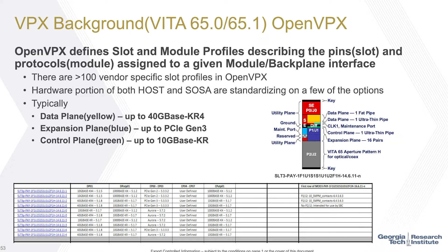Module profiles are essentially a table listing the different planes — data plane, expansion plane, and control plane. For instance, if you pick the first profile, data plane 1 uses 10G Base-KX4, so you know that the pins defined for data plane 1 — the top yellow block — carry 10G Ethernet. Combined, the module profile and the slot profile give you a fully defined interface between the backplane and the module.